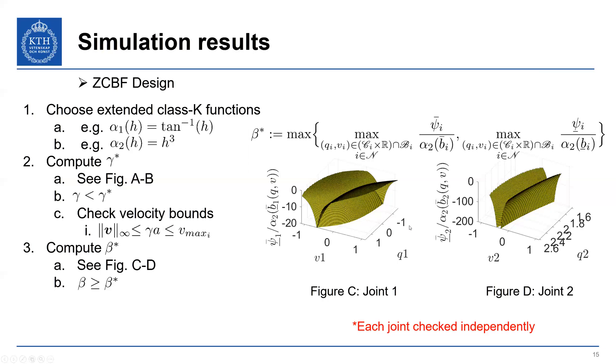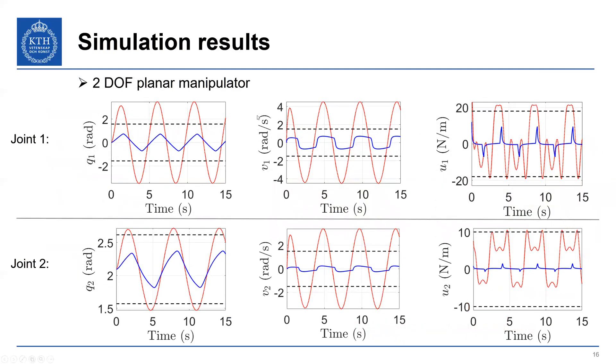So one thing I want to emphasize here is these are conditions we check for each joint independently. You don't have to check for the overall system. So if we have more than... So as we increase the size of the Euler-Lagrange system, it doesn't drastically increase the computational load of solving for these design parameters. We only have to check each joint independently, which is helpful. So when we have our functions, we can plot what this psi_i over alpha_2 of b is, for the design parameter condition, choose our beta to be greater than or equal to this beta star. And then straightforward, we can just implement our controller.